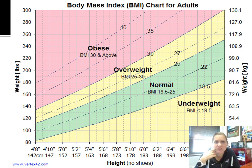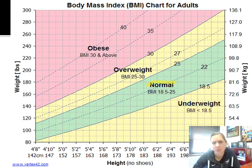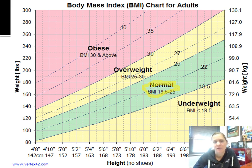Here you can see the chart that compares BMI levels. It's important to know what a normal BMI is: 18.5 to 25 is considered normal, 25 to 30 is considered overweight, and obese is considered 30 or higher.